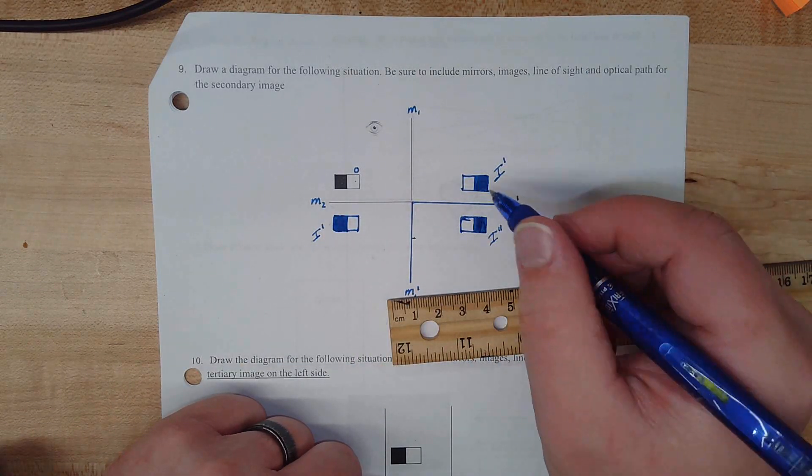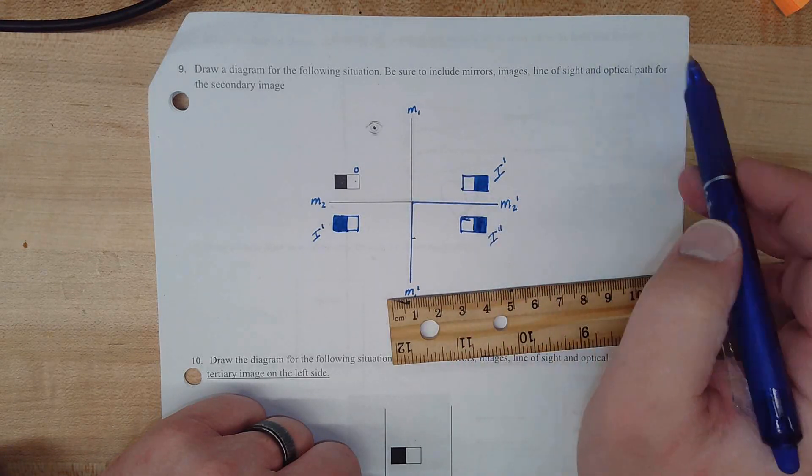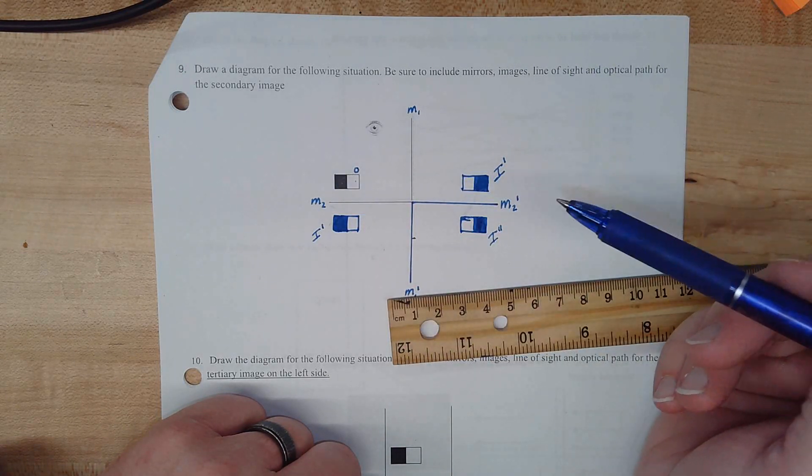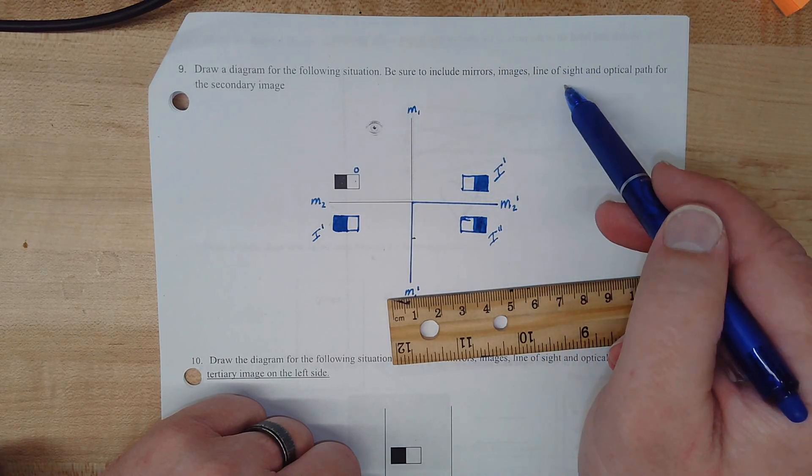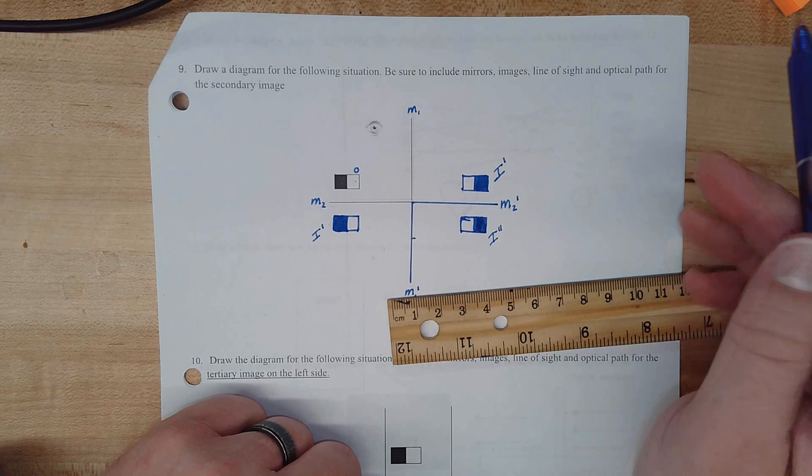All right. So, we now have our secondary image, which we needed for the problem. And we're told to draw the mirrors and images. Those are done. We also need to draw the line of sight and the optical path.